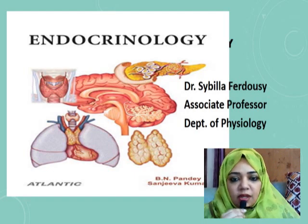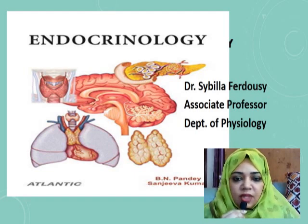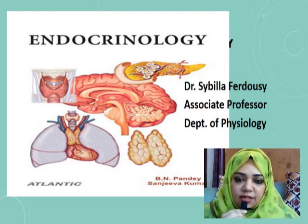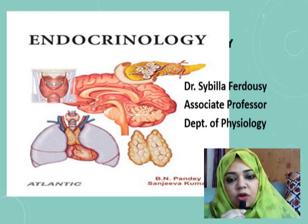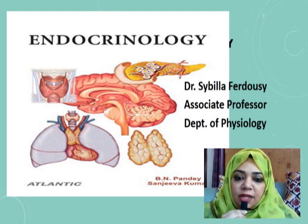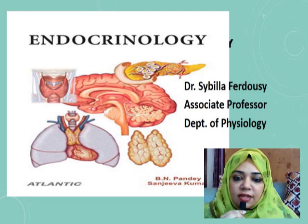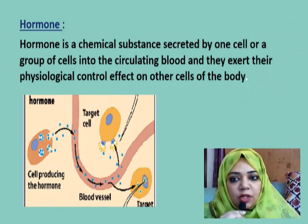Assalamualaikum and welcome to your online class. From today we are going to start a new system — the endocrine system. There are two systems in our body that control all the others: the nervous system and the endocrine system. The endocrine system consists of a series of glands, and these glands produce and secrete hormones. These hormones control the activity of cells, tissues, and organs throughout the body. They regulate growth, development, metabolism, and reproduction. Any pathology — hypersecretion or hyposecretion of these hormones — gives rise to clinical conditions.